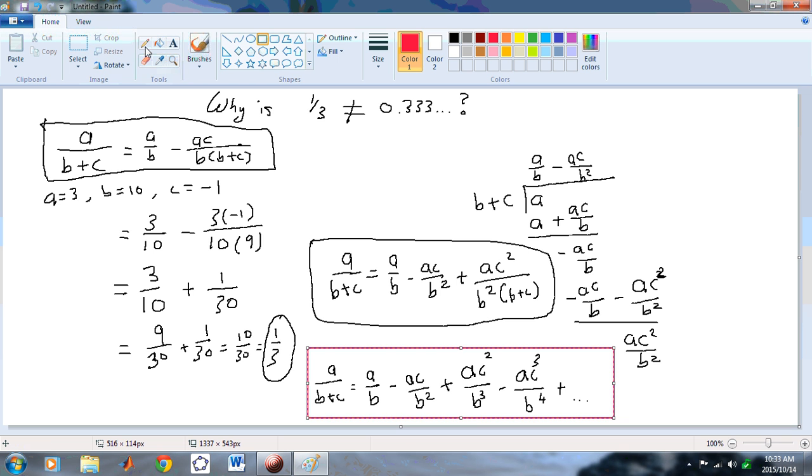By tossing away the last term, which in this particular one is this term, and in this one here is this term, by tossing away the last term, which can also be written generally as minus 1 to the N, A over C to the N, B to the N, B plus C.